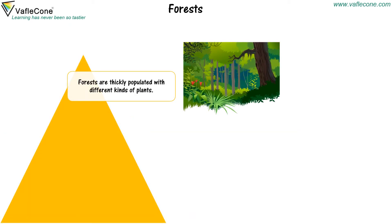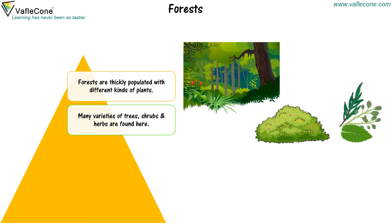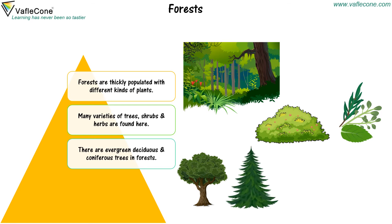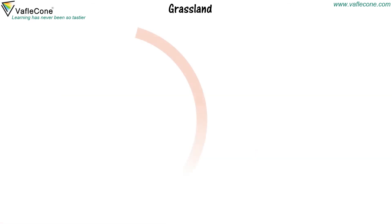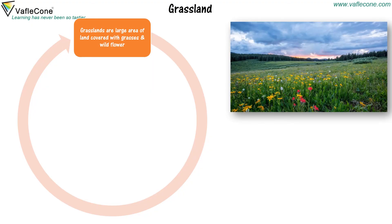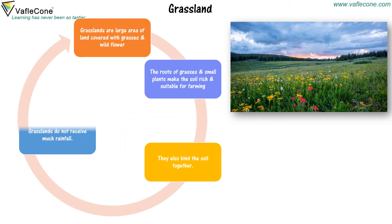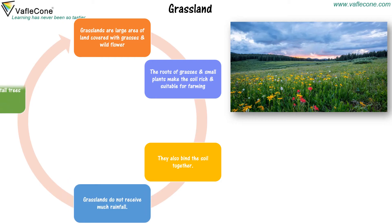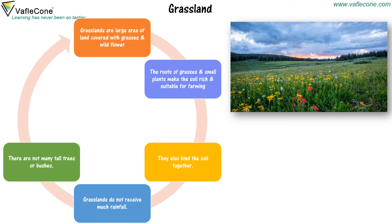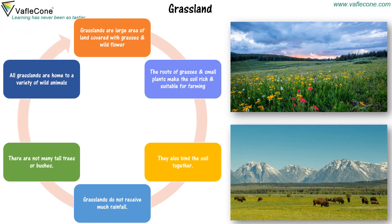Forests are thickly populated with different kinds of plants. Many varieties of trees, shrubs and herbs are found here. There are evergreen, deciduous and coniferous trees in forests. Forests are home to a wide variety of animals and birds. Grasslands are large areas of land covered with grasses and wild flowers. The roots of grasses and small plants make the soil rich and suitable for farming, and also bind the soil together. Grasslands do not receive much rainfall and are home to a variety of wild animals.